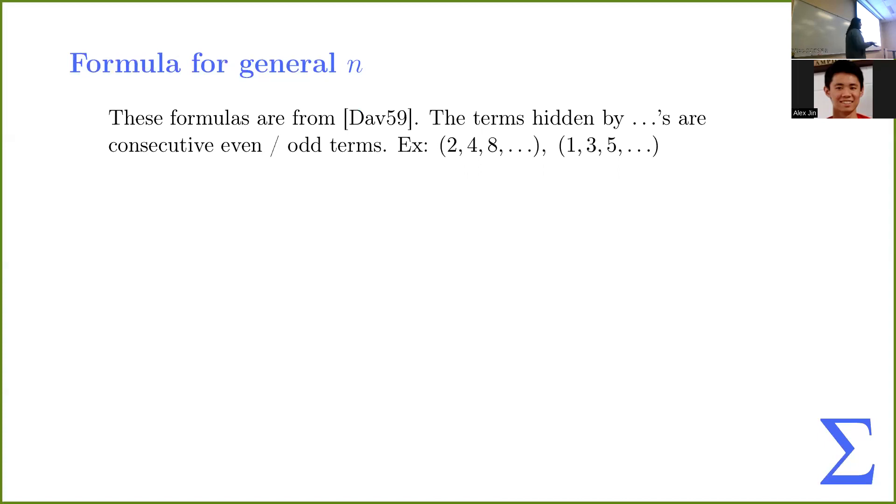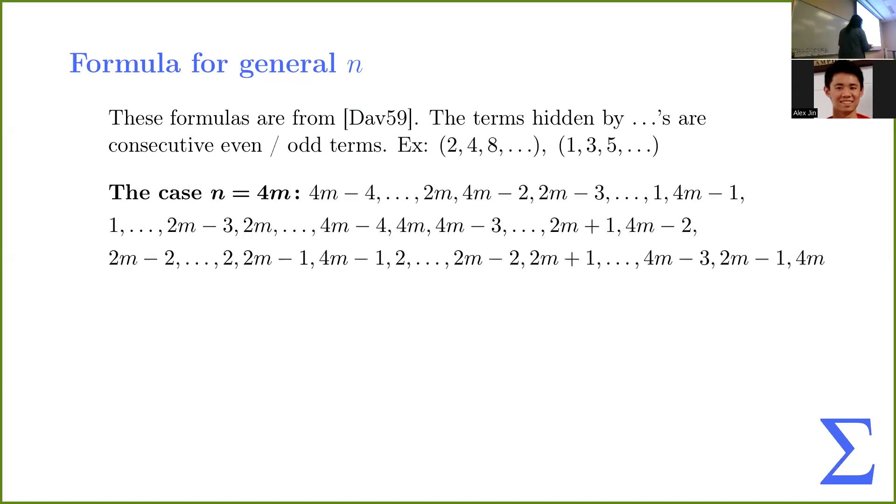So, now we've figured out why, if we can create a Langford pairing for n, n must be a multiple of 4 or 1 less than a multiple of 4. And so, in the same paper, they came up with formulas for generating a single pairing for a general n. And I'll just show you the formula. So, this is the case for 4m. It's a mess. I'm going to be real. I don't fully understand. In the paper, he literally just says this works, with no explanation. And you can believe me that it works if you want. So, what am I doing here? So, the ellipses are just consecutive, even or odd terms. So, for n is a multiple of 4, we're going to start with 4m minus 4, then 4m minus 6, then 4m minus 8, et cetera.